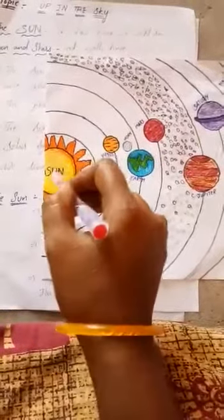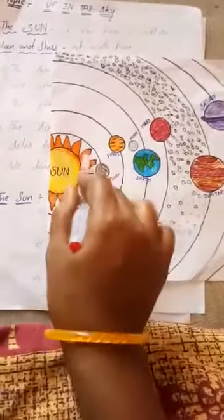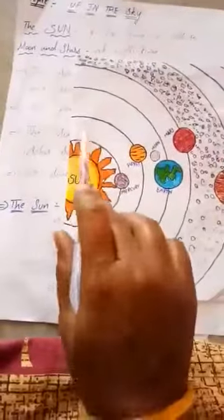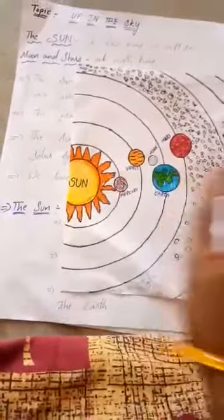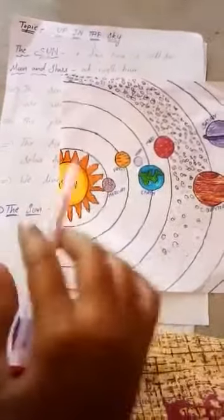The sun is a huge ball of very hot gases. It is many times bigger than the Earth.